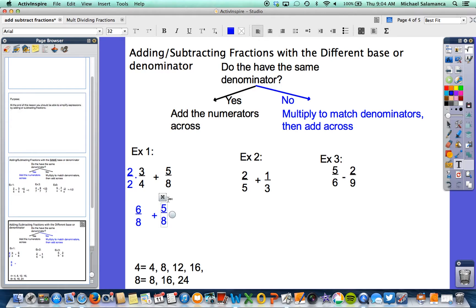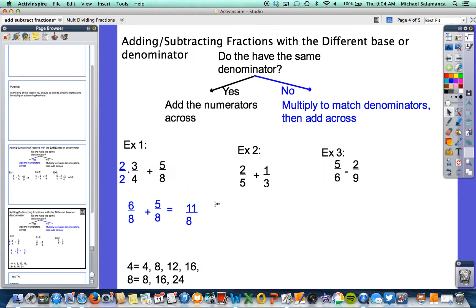And now we're back at the original slide where they do have the same denominator. So we're going to go ahead and add the numerators across. And that gives us 11 eighths. So notice here, the only thing that differed was that we changed the 6 eighths.